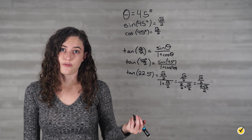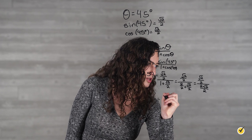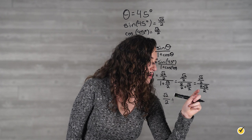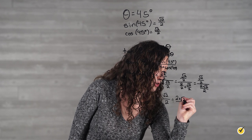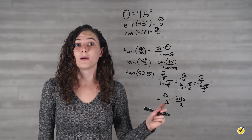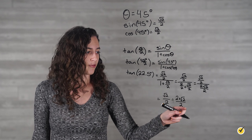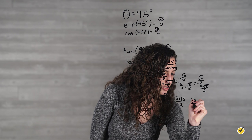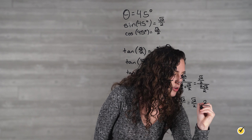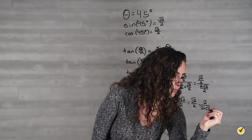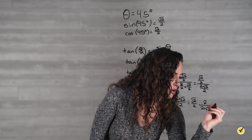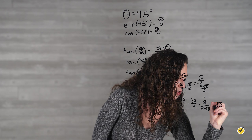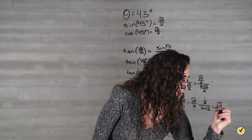Now we can turn this into fraction division. So this is equal to the square root of 2 over 2 divided by 2 plus the square root of 2 over 2. Remember, when you divide fractions, it's the same as flipping the second fraction and multiplying them. So this is equal to the square root of 2 over 2 times 2 over 2 plus the square root of 2. If we multiply these across, our 2's will cancel out and we'll be left with the square root of 2 over 2 plus the square root of 2.